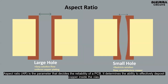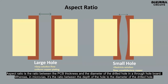Aspect ratio is the parameter that decides the reliability of a PCB. It determines the ability to effectively deposit copper inside the vias. Aspect ratio is the ratio between the PCB thickness and the diameter of the drilled hole in a through-hole board. Whereas in micro vias, it's the ratio between the depth of the hole to the diameter of the drilled hole.